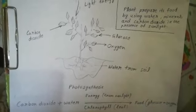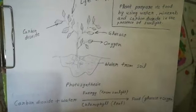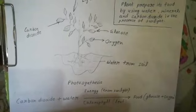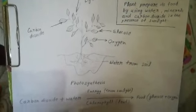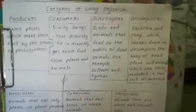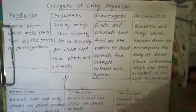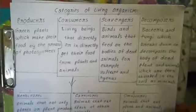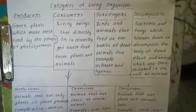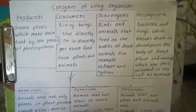Now, plants can make their own food. What about other animals? Other animals are dependent on each other for food. According to their dependency, animals are categorized. We will understand those categories. Categories of living organisms — they are divided into four categories: Producers, Consumers, Scavengers, and Decomposers.